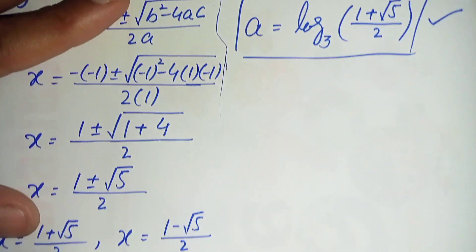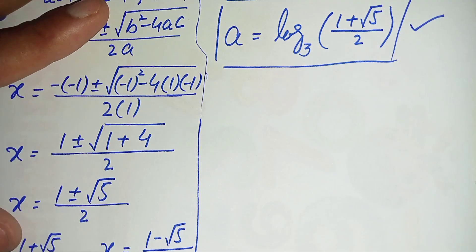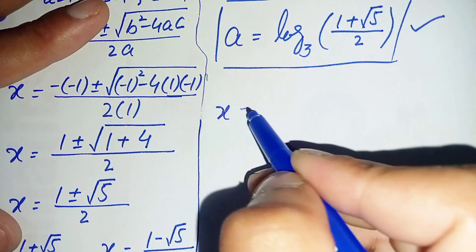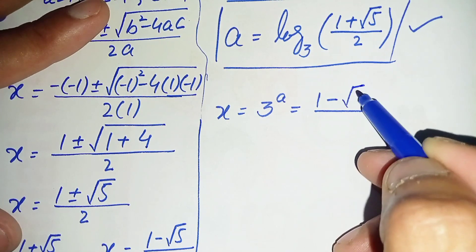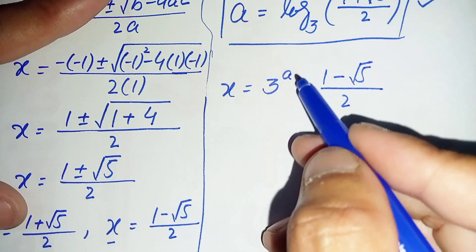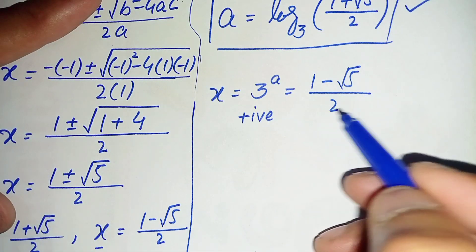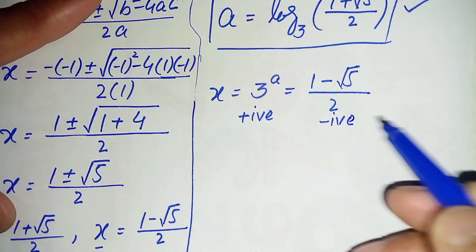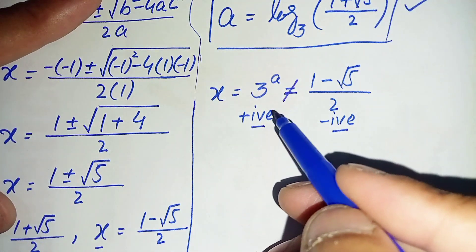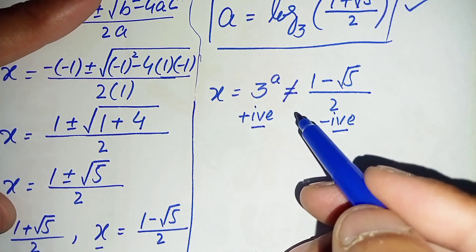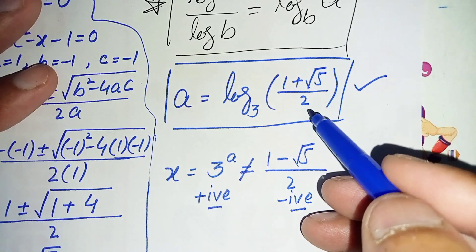Now we solve the second equation: 3 raised to power a equals 1 minus square root of 5, divided by 2. For any real number a, 3 raised to power a is always positive. This value is negative, and a positive value cannot equal a negative value, so we reject this solution. Therefore, we have only one solution: a equals log base 3 of 1 plus square root of 5, divided by 2.